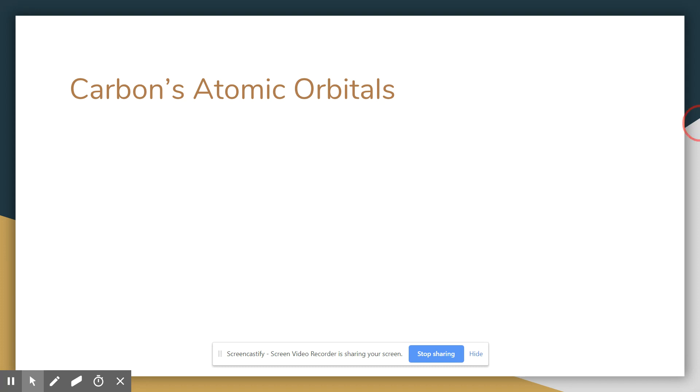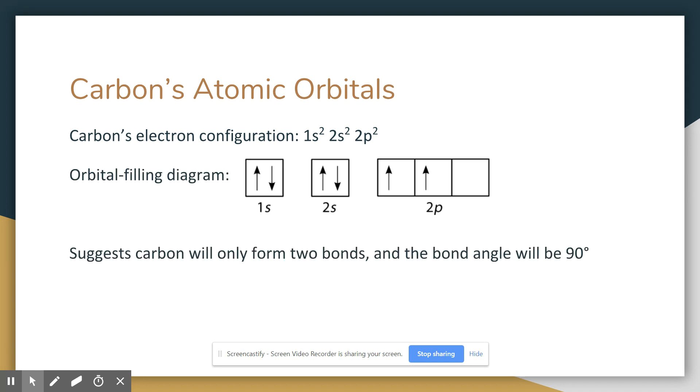We're going to take a look at carbon, since organic chemistry is about carbon, and specifically carbon's atomic orbitals. You remember its electron configuration, 1s2, 2s2, 2p2, which means that in its orbital filling diagram, you have a pair in the 1s. Those are core electrons. We don't really care about them. You have a pair in the 2s, and then two electrons in separate p orbitals. Now, looking at that, that suggests that carbon is going to want to form two bonds to pair up those two unpaired electrons. And if it forms two single bonds, those bonds should have a bond angle of about 90 degrees. Why 90 degrees?